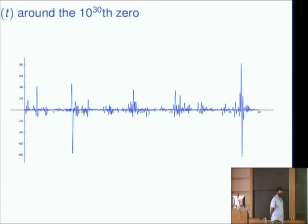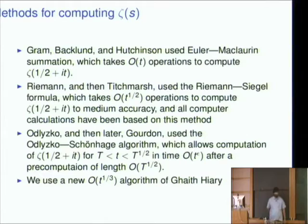So I'll tell you the methods that are used a little bit. Graham, Backlund, and Hutchinson just used Euler-McLaurin summation to compute the zeta function. And this takes about t arithmetic operations to compute the zeta function at one half plus i t. They were really going a step backwards from Riemann, because Riemann knew how to do better than this, but he never published his work. And so that was rediscovered by Siegel in 1930-ish. And that was used by Tishmarch later.